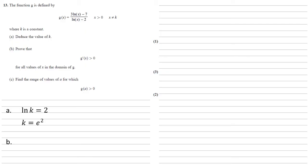For part (b), we need to prove that g'(x) > 0 for all values of x in the domain of g. Since g is a fraction u/v, we differentiate using the quotient rule: g'(x) = (v·du/dx − u·dv/dx) / v².